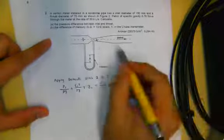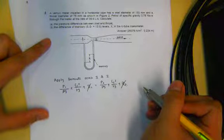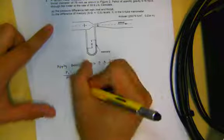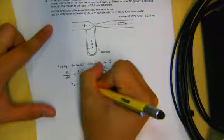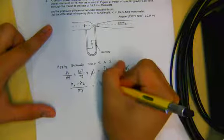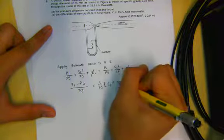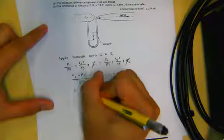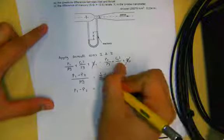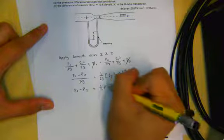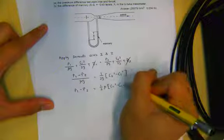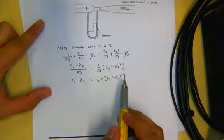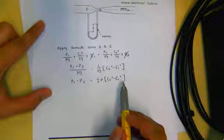Writing the Bernoulli equation with pressure head, velocity head, and potential, and since points 1 and 2 are at the same level, Z1 and Z2 cancel. We want the pressure difference, so bringing pressure to the left: P1 minus P2 over rho G equals (1 over 2G)(C2 squared minus C1 squared). Cross-multiplying gives P1 minus P2 equals half rho times (C2 squared minus C1 squared).